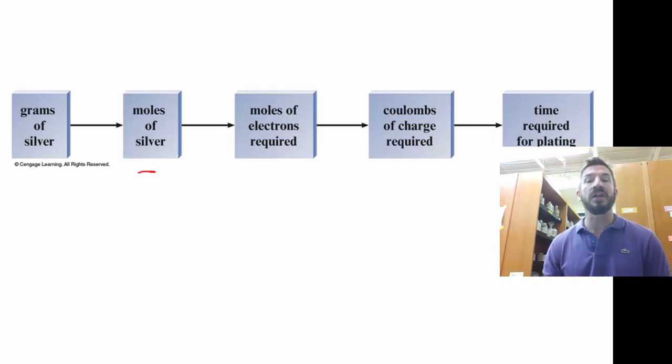And then we're going to go to something called a coulomb. A coulomb is a unit of charge. There's 96,500 coulombs per one mole of electron. And then we're going to look at amps. Coulombs is equal to amps times seconds. And so we're going to use all those in this conversion.